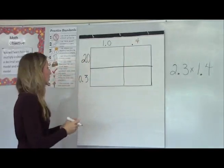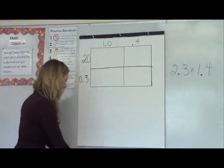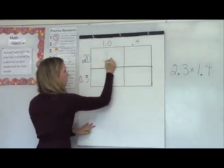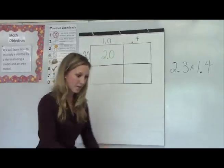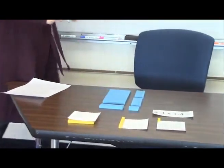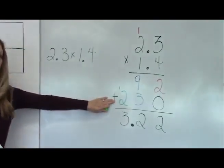So when I multiply two wholes by one whole, I would get two wholes. You can see that in my model, because I have two whole flats. If we look at the standard algorithm, you can see that the two wholes is represented there.